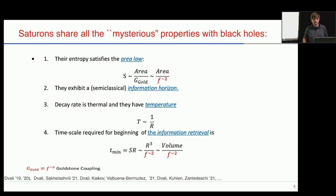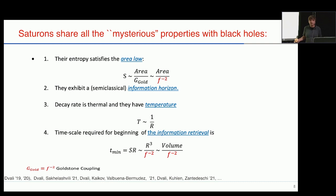Once you have a saturated system — a saturon — it also exhibits all the other properties of a black hole. Semi-classically, they have an information horizon: you cannot extract information from them. They decay with a rate close to thermal, with inverse radius, and the time scale for the start of information retrieval is given by exactly the same expression as for a black hole.